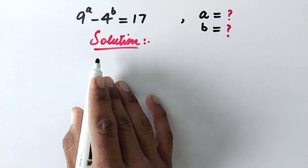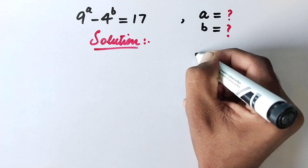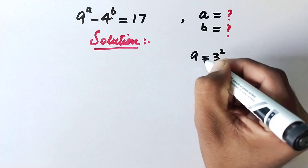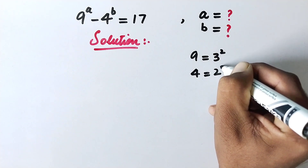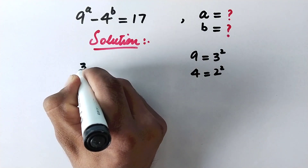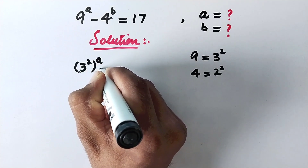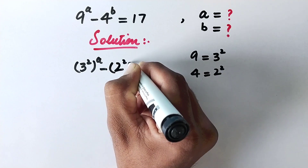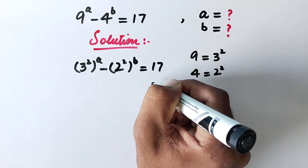In the first step, we can express 9 as 3 squared and 4 as 2 squared. So here we can write 3 squared to the power a minus 2 squared to the power b is equal to 17.